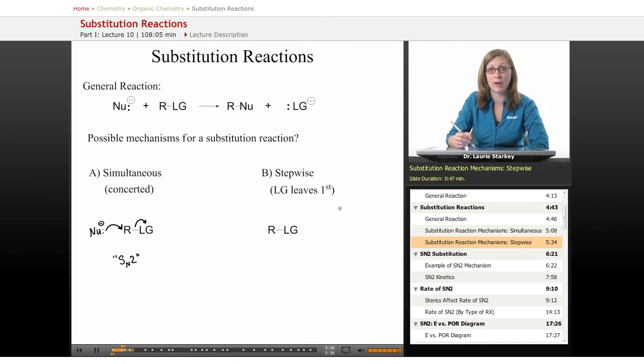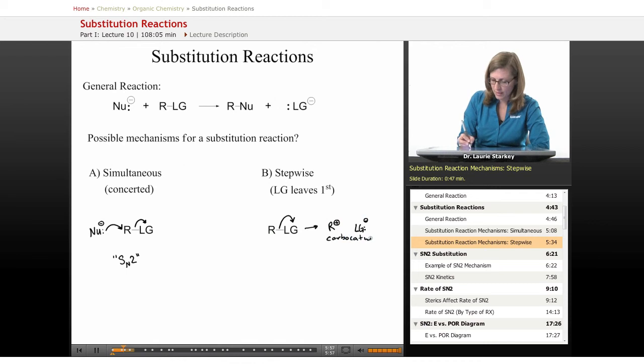But another possibility is that we have a stepwise mechanism in which the leaving group leaves first. Now, if the leaving group leaves, what does that leave behind on this carbon? This carbon is now missing a bond, so this would end up being a carbocation. And then that carbocation could combine with the nucleophile to give our substitution product. And in fact, that mechanism happens as well. This mechanism is known as the SN1 mechanism. So we're going to be learning both about this concerted mechanism and the stepwise mechanism. And they're called the SN2 and the SN1.